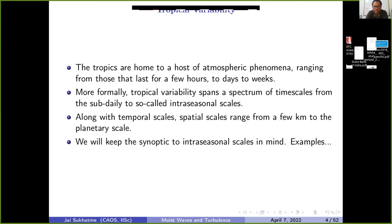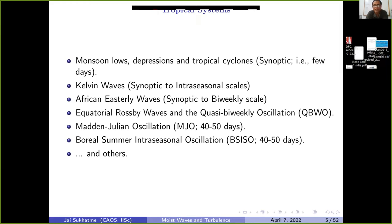Let me list a few examples of tropical systems in this range — this is by no means exhaustive. In the synoptic category we have monsoon lows, depressions, tropical storms, and cyclones. Then come Kelvin waves ranging from synoptic to intraseasonal scale, African easterly waves seen off the coast of Africa, equatorial Rossby waves tied to the quasi bi-weekly oscillation with a period of about 20 days, the Madden-Julian Oscillation with a period of about 50 days, and its cousin the Boreal Summer Intraseasonal Oscillation, or BSISO.